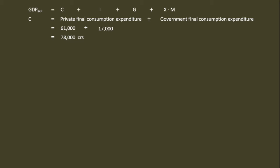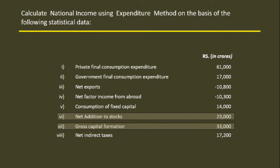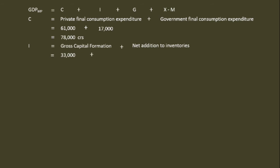Similarly, all investment expenditures must be added and brought under the head Investment I. I equals Gross Capital Formation plus Net Addition to Stocks. Investment expenditures are: Gross Capital Formation – 33,000 crores and Net Addition to Stocks – 23,000 crores, giving a total of 56,000 crores. There is no Government Investment Expenditure.